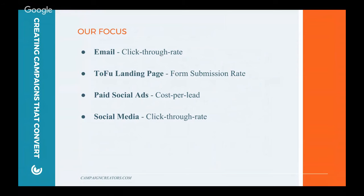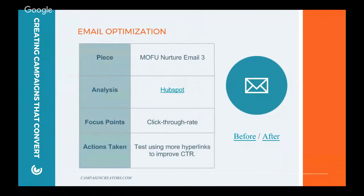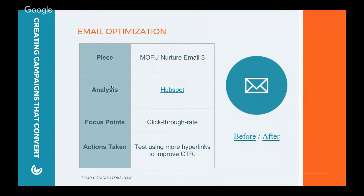So let's jump into the optimization. We organized our process: picked out a particular piece, did some analysis using various tools laid out earlier in the webinar, used the checklist and the PI analysis to find a focus point, and then went to our trusty campaign optimization handbook to find a strategy that worked best for this particular piece and boost performance.